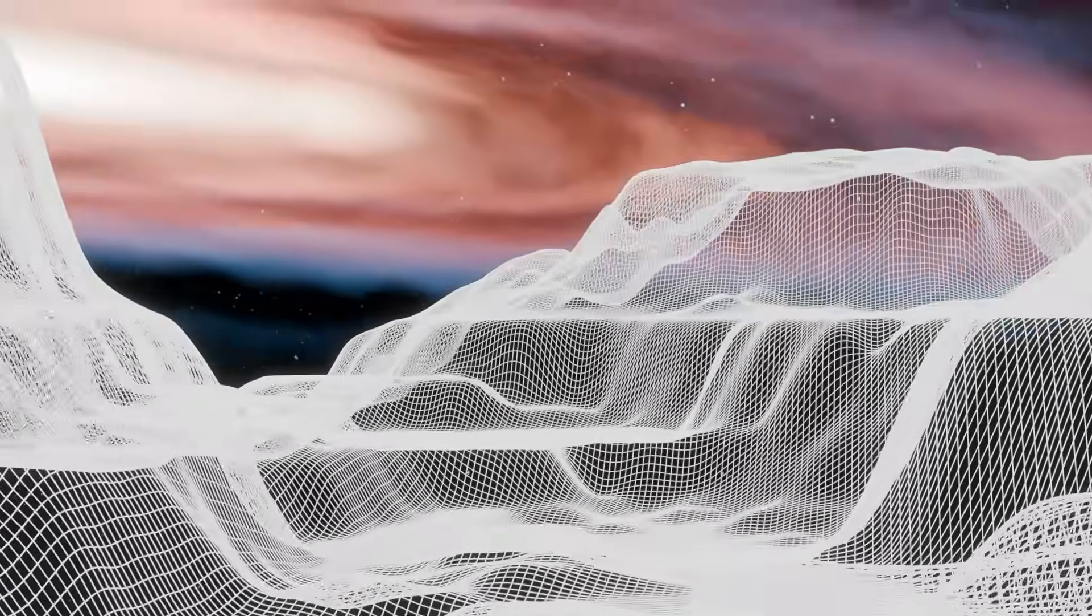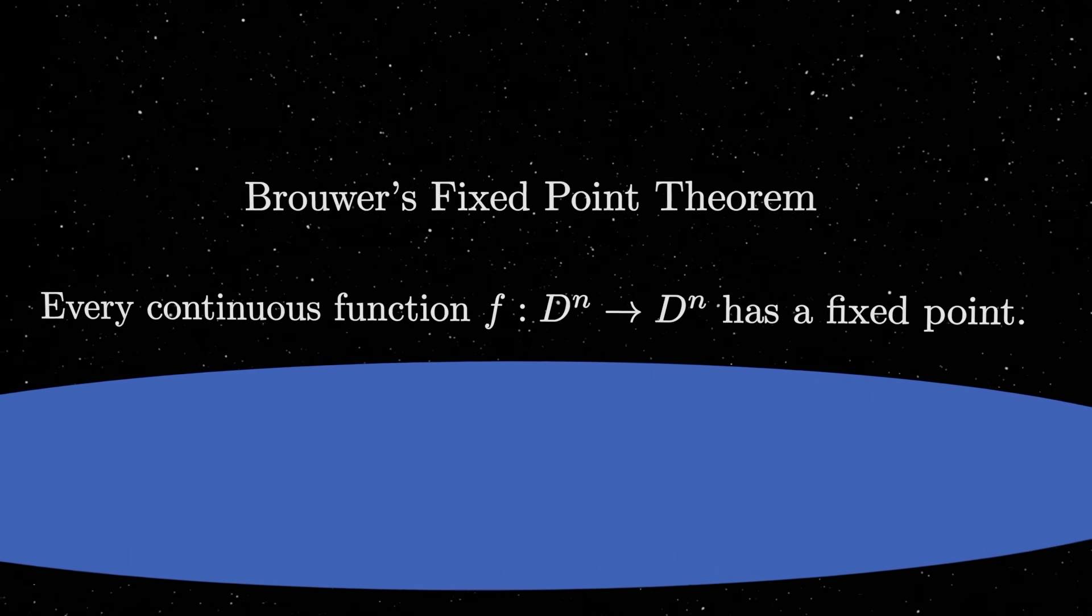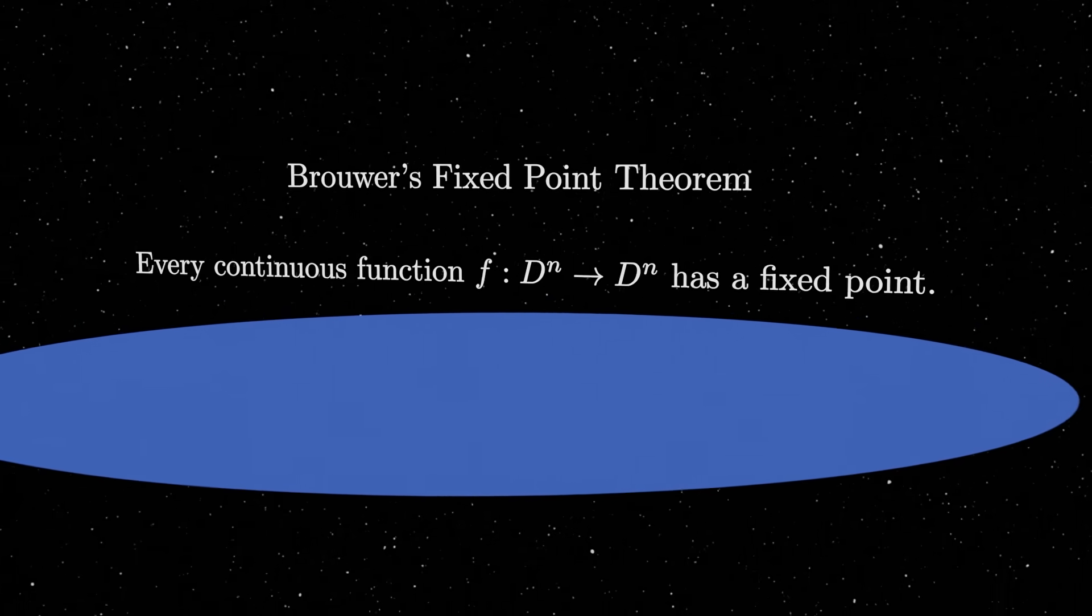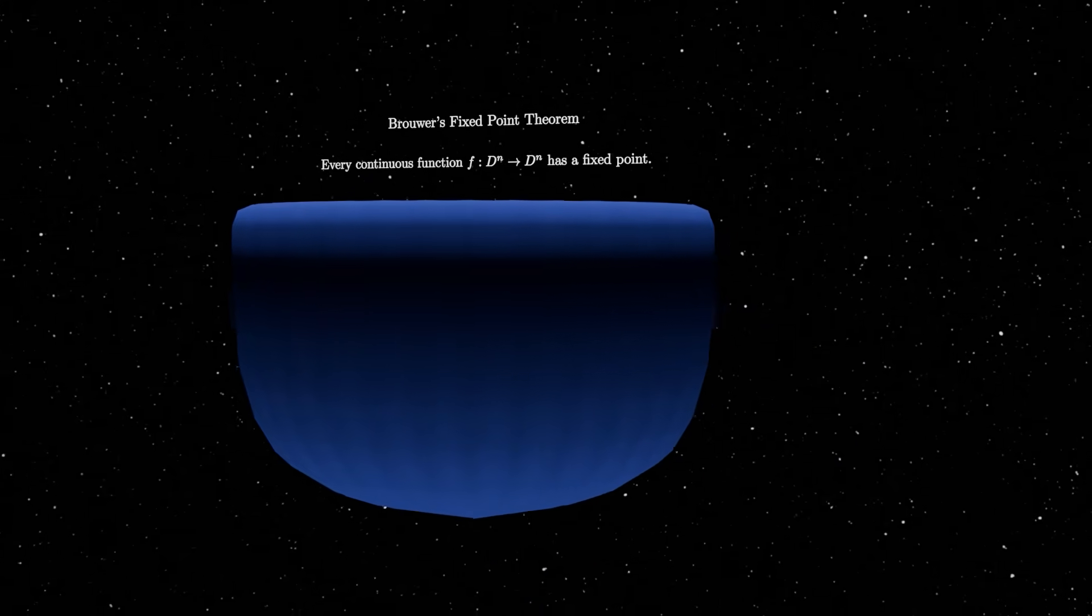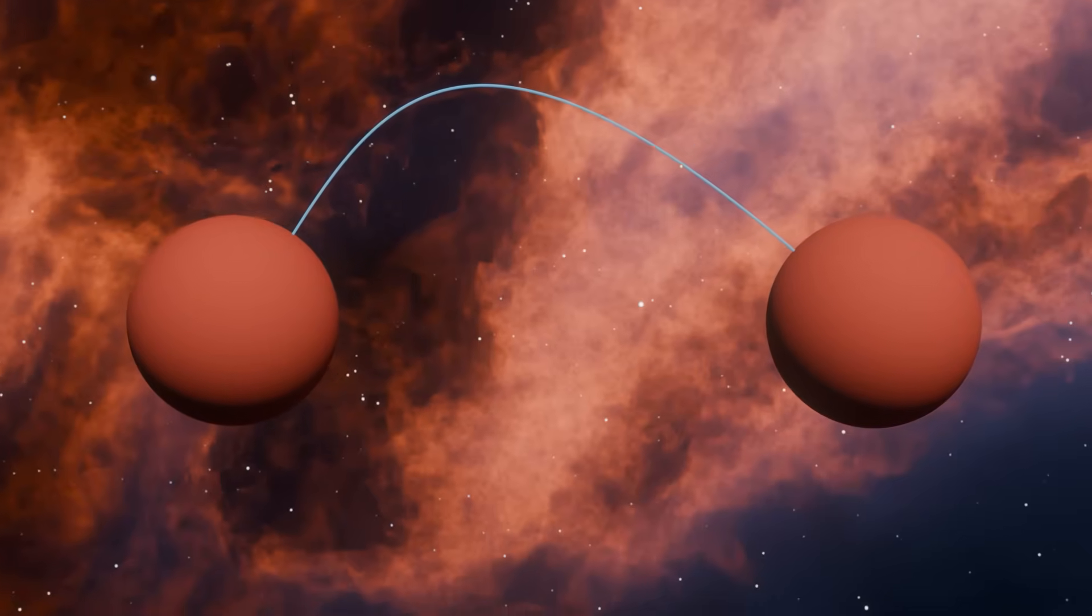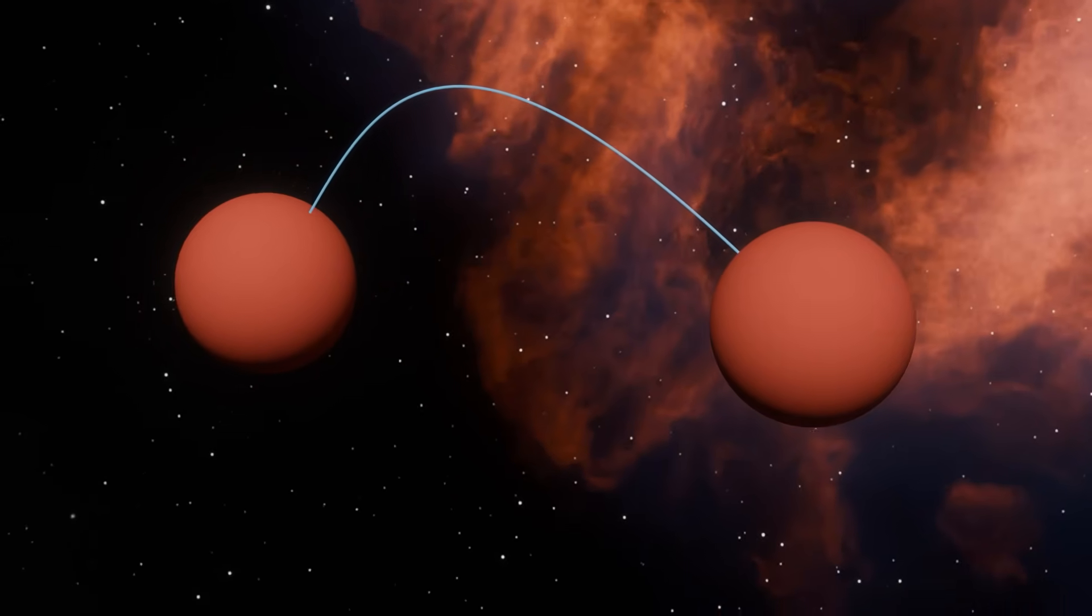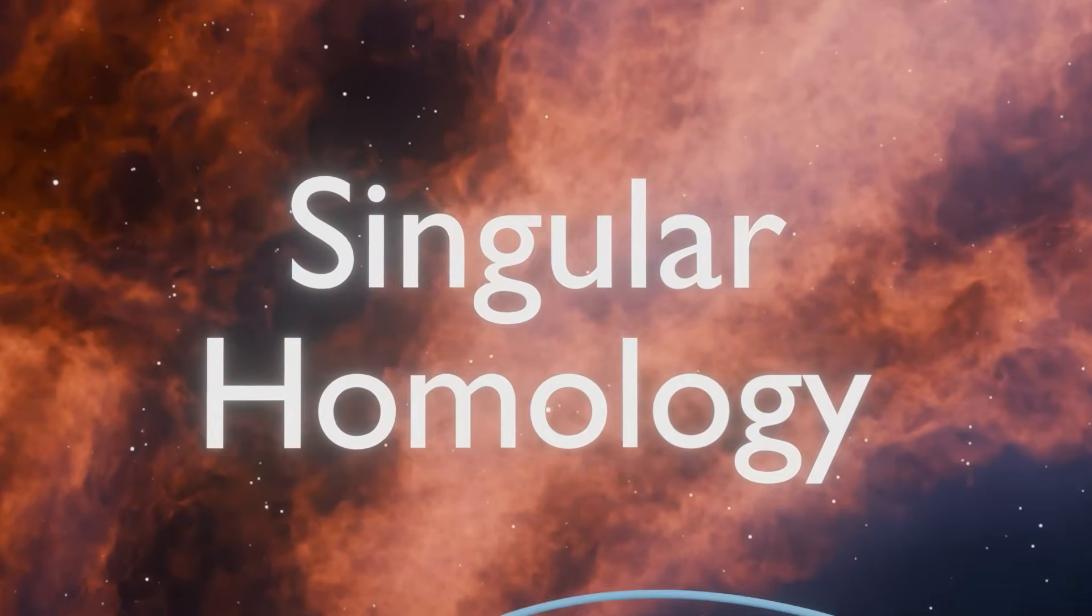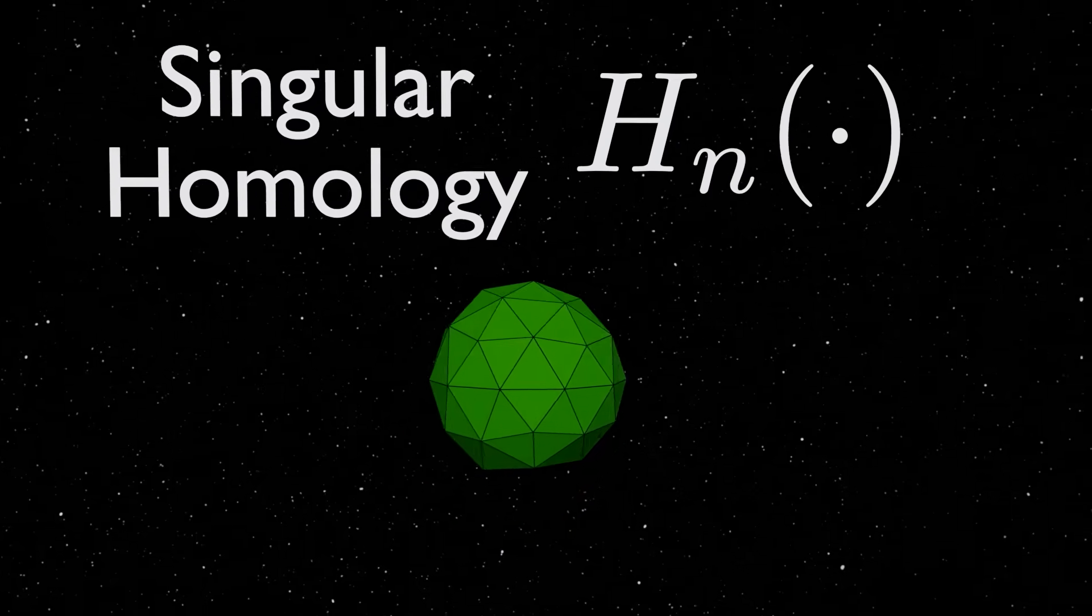What we just proved is called Brouwer's fixed point theorem in two dimensions, which says that a continuous map between a filled circle to itself must always have a fixed point. Now, I want to talk briefly about how one can generalize this from two dimensions to three, four, and arbitrarily large dimensions. So for the case of three dimensions, our statement would say that any map from a filled sphere to itself must contain a fixed point. The way that you would prove this is very similar to our original strategy, but instead of using the fundamental group, we will use another algebraic object known as the singular homology. It would be a big digression on this video to explain the singular homology, so I'll skip out on this for this video.